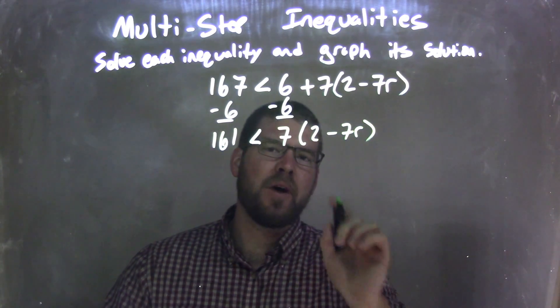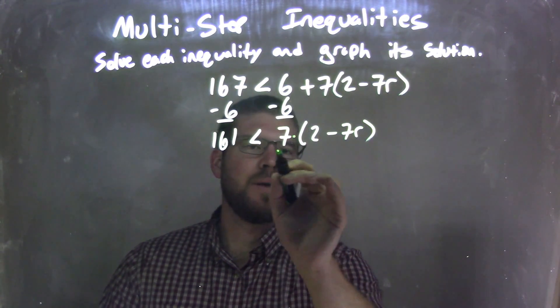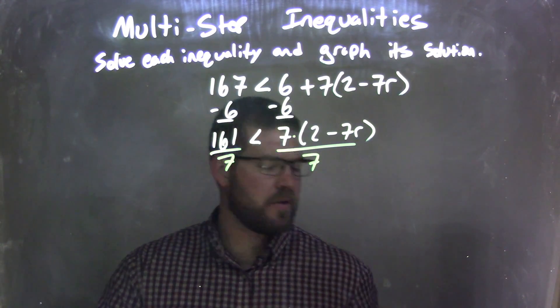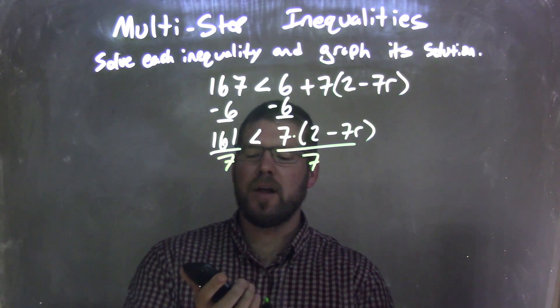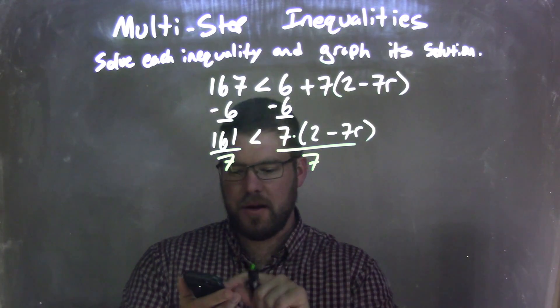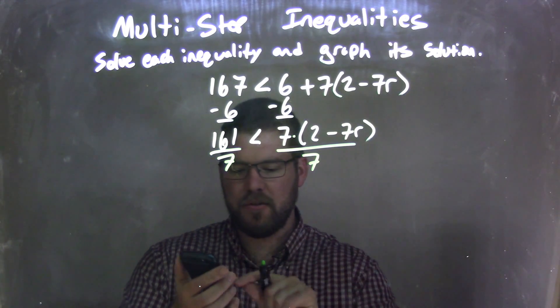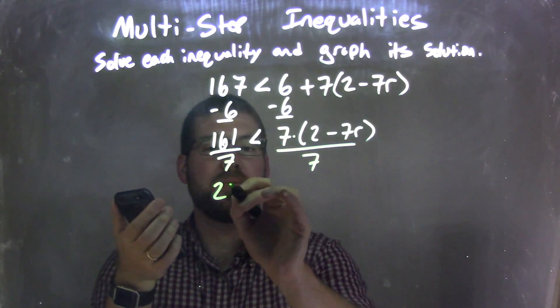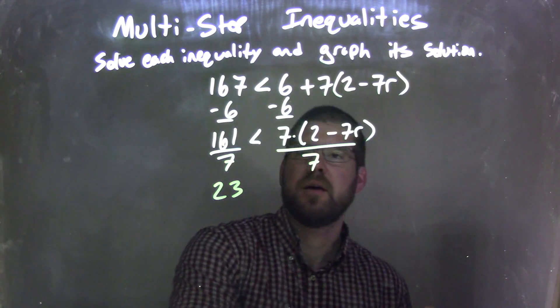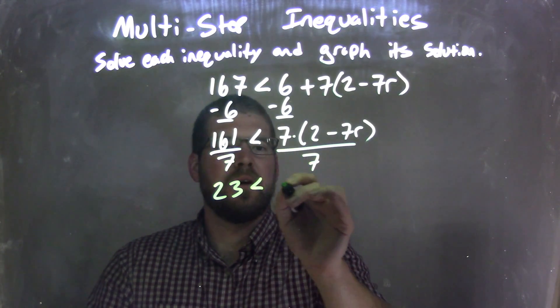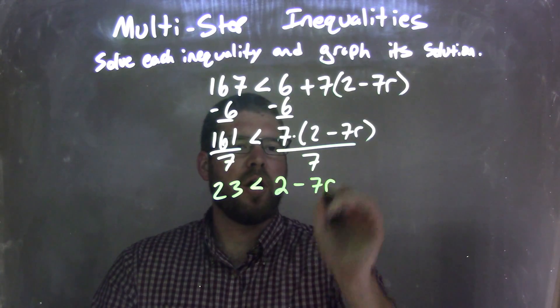If I want to divide by 7 on both sides, that would eliminate this 7 here instead of distributing it across. What's 161 divided by 7? I personally don't know off the top of my head. Using our calculator, we have 23. So 23 is less than 2 minus 7r.